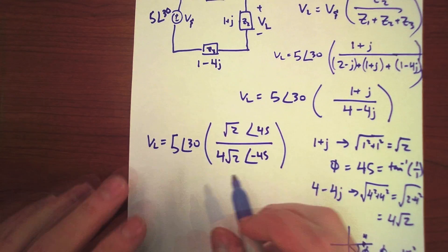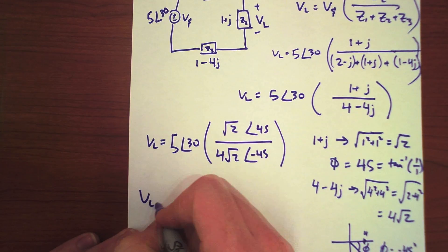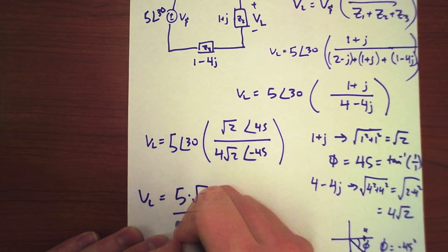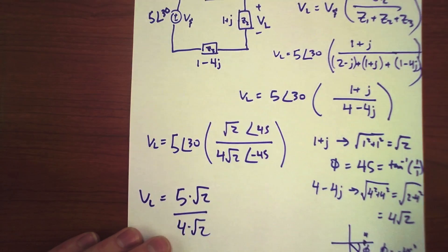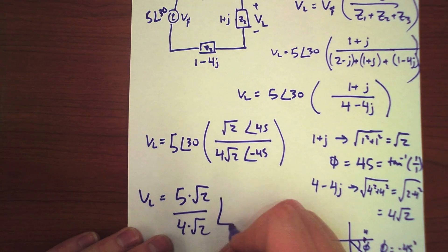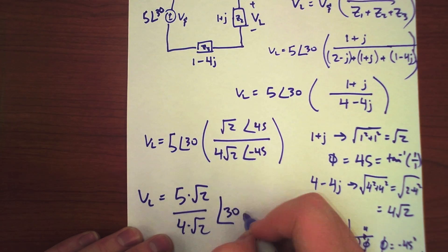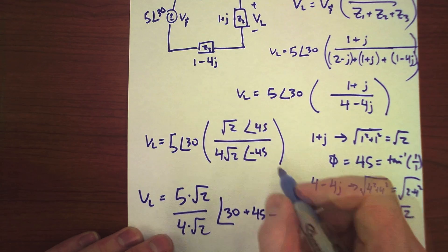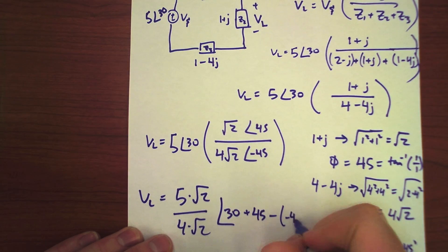And now, we can start simplifying. So, VL equals 5 times radical 2 divided by 4 times radical 2. And this is why we use phasors, because we just simply do 30 plus 45 and then subtract the bottom minus 45.